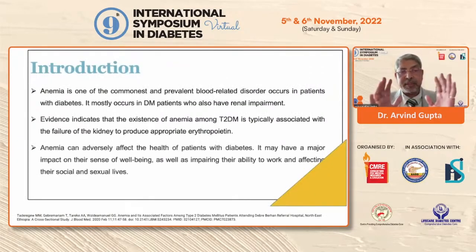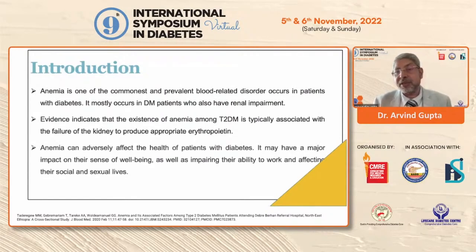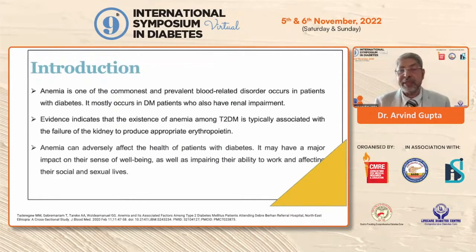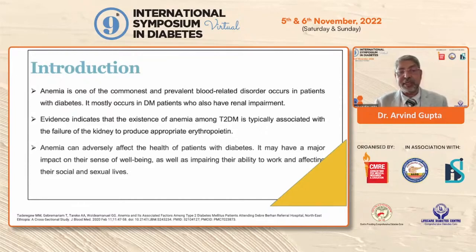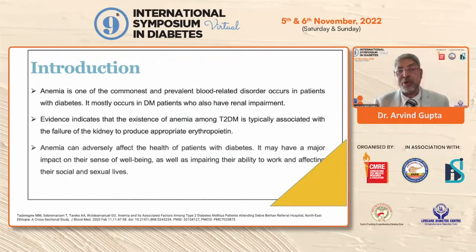At the outset, anemia is one of the commonest and most prevalent blood-related disorders occurring in patients with diabetes. We never think of that earlier, and it mostly occurs especially when patients are already having renal impairment. Most evidence indicates that anemia among type 2 diabetes is especially associated with kidney failure, where appropriate erythropoietin is deficient.